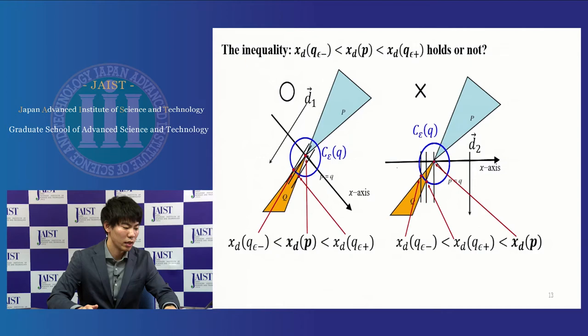There are two samples to make sure the inequality holds or not. The left guy holds that inequality, but the right guy is not. So in the right guy, a point Q in the boundary polygon Q does not support a point P in the boundary polygon P with respect to direction D2.